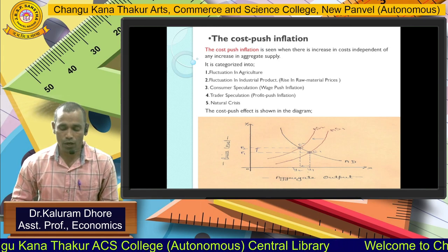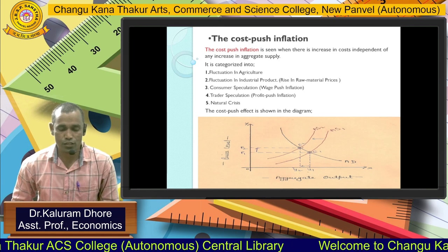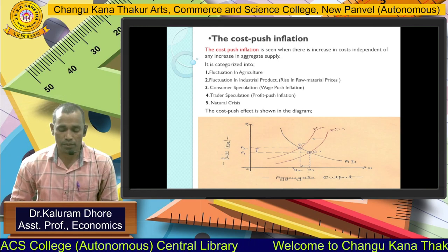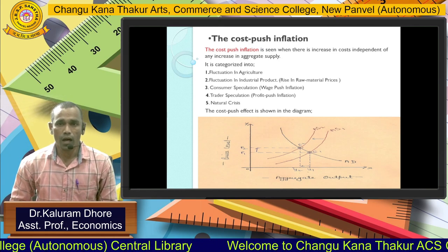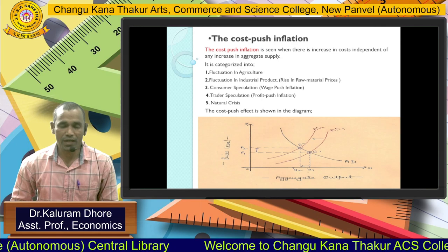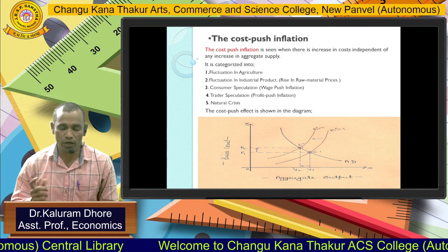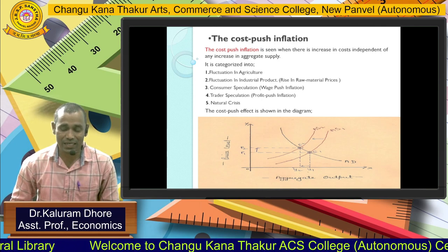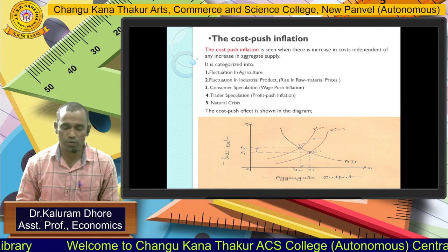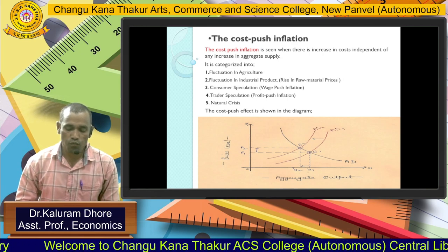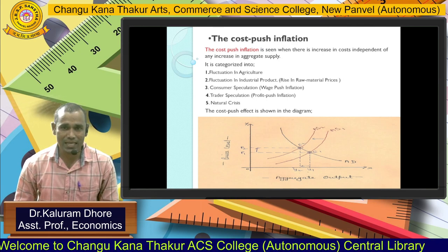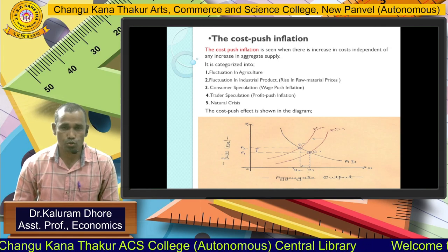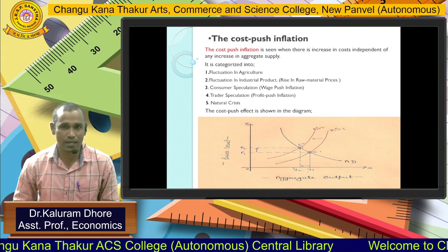Why does aggregate output decrease and why does price increase? Because of Cost-Push Inflation, the initial equilibrium point is E1 and the new equilibrium point is E2. The distance between E1 and E2 shows us the Cost-Push Inflation through the general price level.